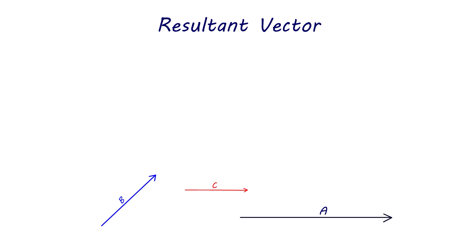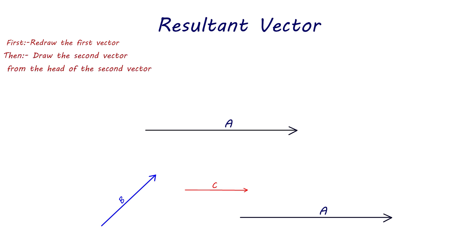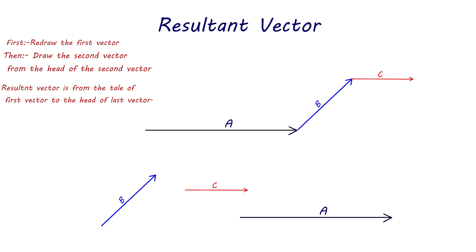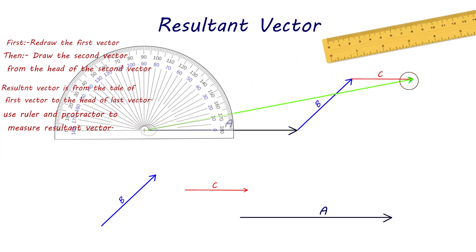Resultant vector. The resultant vector represents the sum of two or more vectors. When adding vectors, you must ensure they have the same units and describe similar quantities. To add vectors graphically: first, redraw the first vector with the same magnitude and direction; then draw the second vector starting from the head of the first, following the tail-to-head rule. Continue until all vectors are drawn. The resultant vector is drawn from the tail of the first vector to the head of the last vector. Finally, measure the resultant vector's magnitude with a ruler and its direction with a protractor.